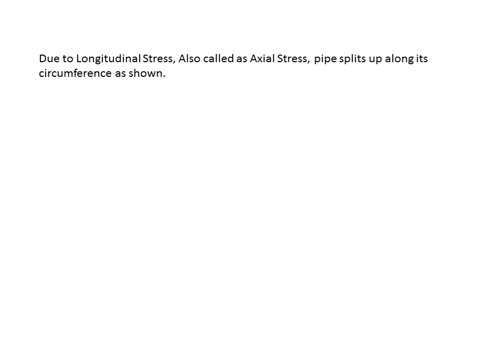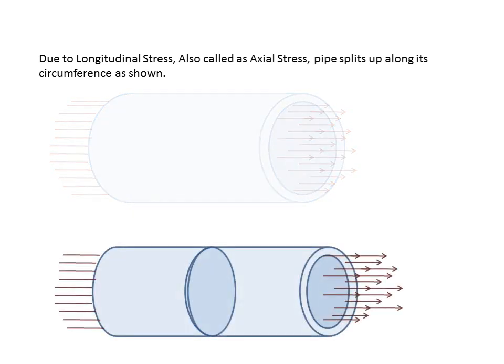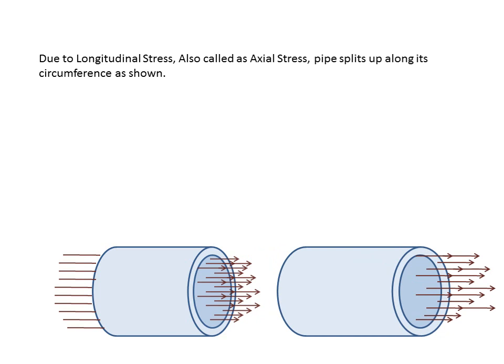Due to longitudinal stresses — also called axial stresses — the pipe splits up along its circumference. If the pressure is too high, a vertical split will occur, leading to failure and damage of the pipe. An image of the axial failure mode is shown.